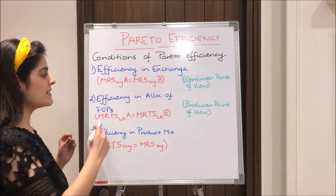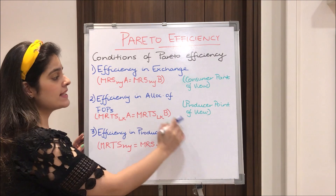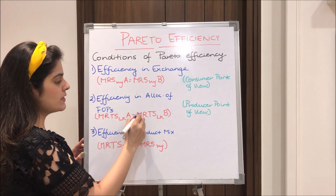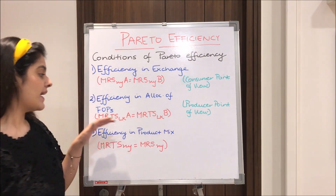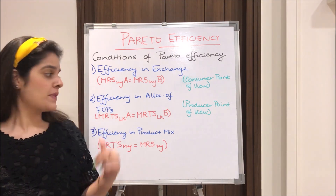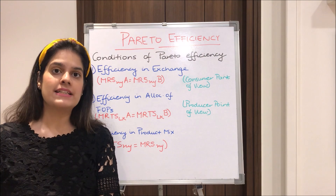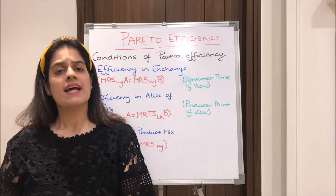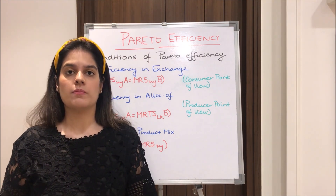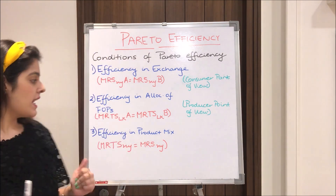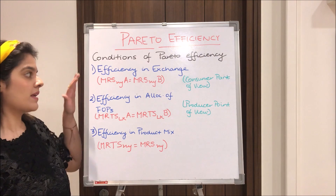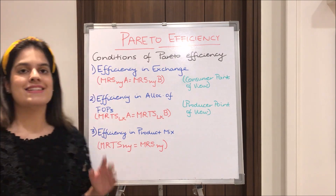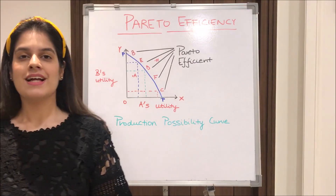The second condition is efficiency in allocation of factors of production, from the producer point of view. Here, MRTS LK for firm A equals MRTS LK for firm B, where L and K stand for labor and capital respectively. MRTS is the marginal rate of technical substitution — when the producer wants to increase one input, he reduces another so that output remains the same. Lastly, efficiency in product mix is the amalgamation of the first two: MRTS XY equals MRS XY.